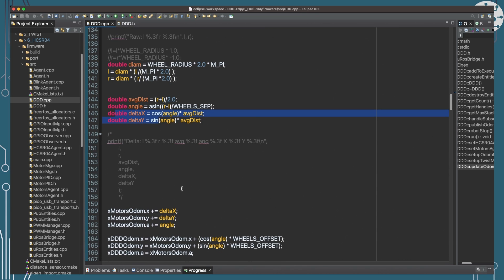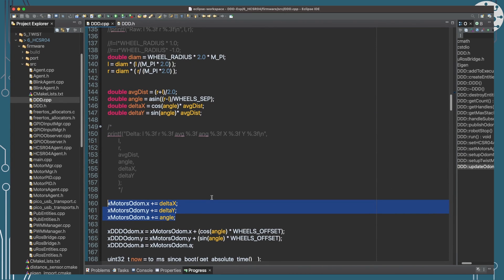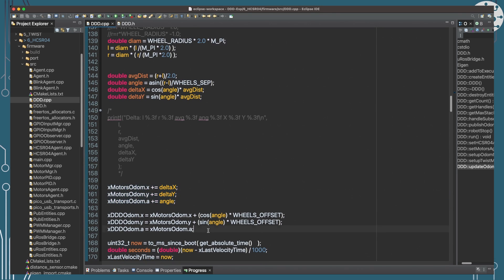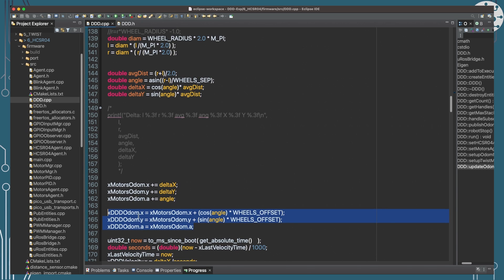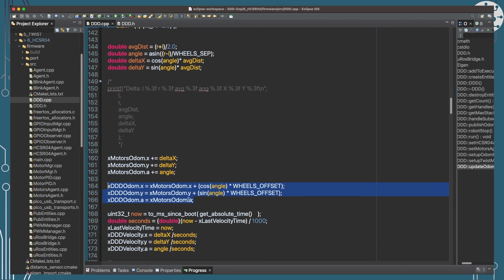And that will allow us to actually then compute what the X and Y change that we've gone through is. We can then add that X, Y and the angle onto our previous values for the motors Odometry position, and use that to then calculate, based on the offset for where DDD's base link is, what is DDD's new Odometry base position.